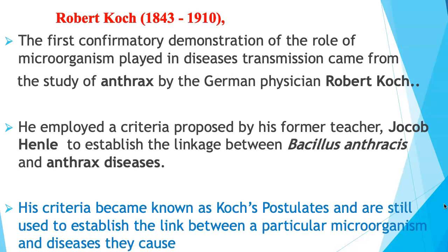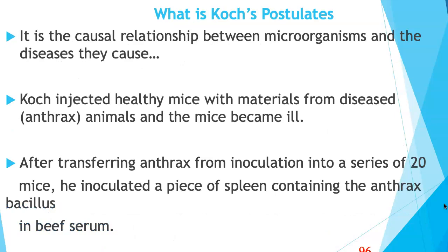The first confirmatory demonstration of the role of microorganisms in disease transmission came from the study of anthrax disease by German physician Robert Koch. He employed criteria proposed by his former teacher Jacob Henle, and with this he was able to establish the linkage between Bacillus anthracis and anthrax disease. His criteria became known as Koch's postulates, which establish the causal relationship between a microorganism and the disease it causes.